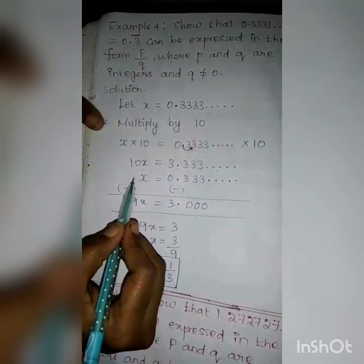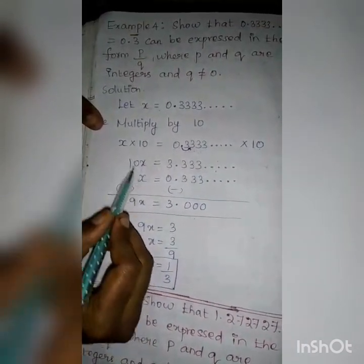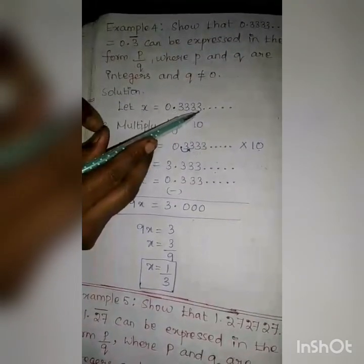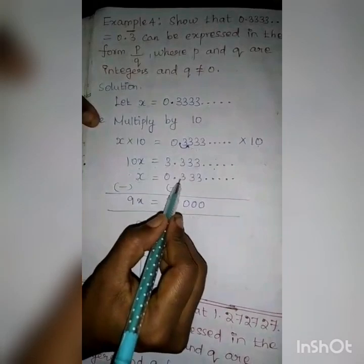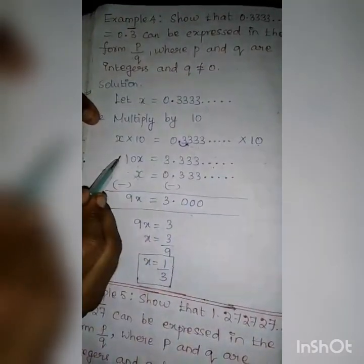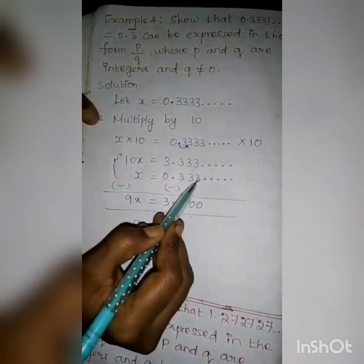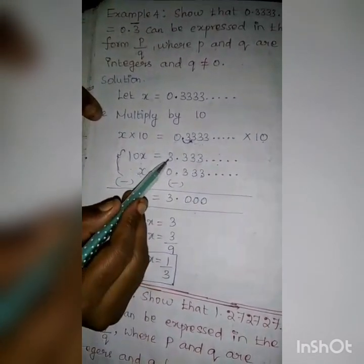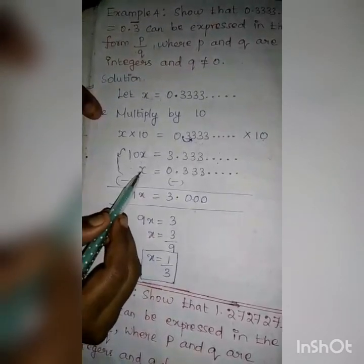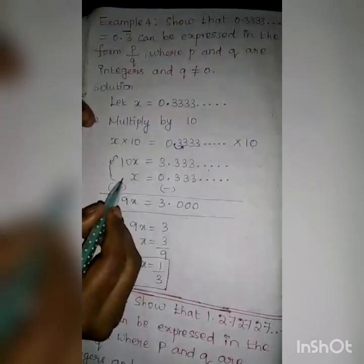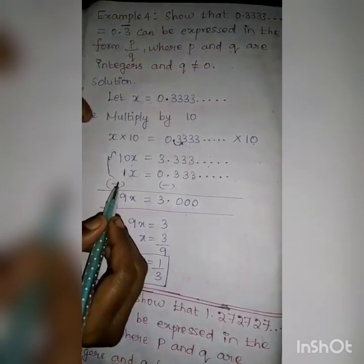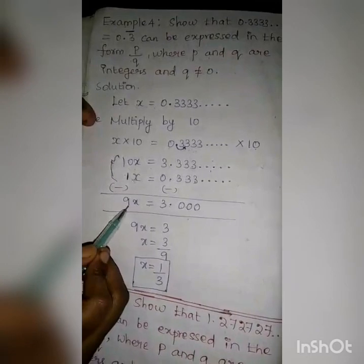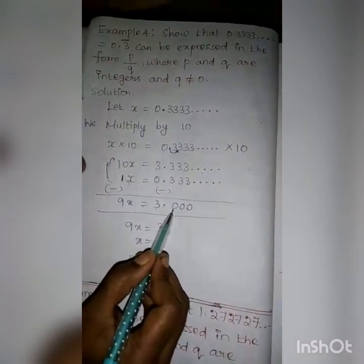We have to subtract X from 10X. The given value is X equal to 0.3333 etc. Subtract these two expressions: 3 minus 3 is 0, 3 minus 3 is 0, 3 minus 3 is 0 — point is there, then 3 minus 0 is 3. The coefficient of X is 1, so 10 minus 1 is 9X. Therefore, 9X is equal to 3.000.